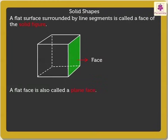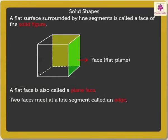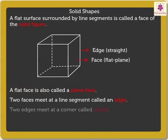A flat face is also called a plain face. Two faces meet at a line segment called an edge. Two edges meet at a corner called vertex.